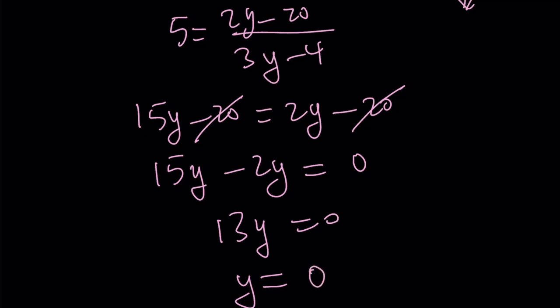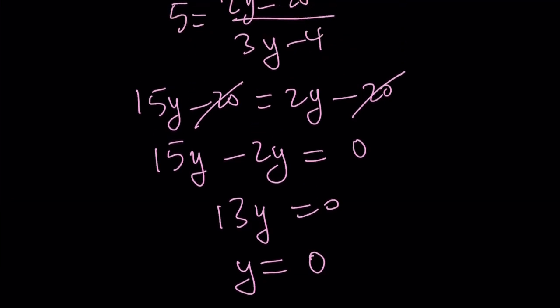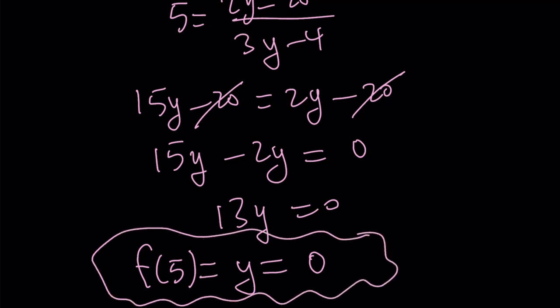So you couldn't divide both sides by y. That's how they prove, you know, some stuff that is not actually true. So f of 5 we were looking for and we set it equal to y, therefore, f of 5 is equal to 0. And that is the answer.